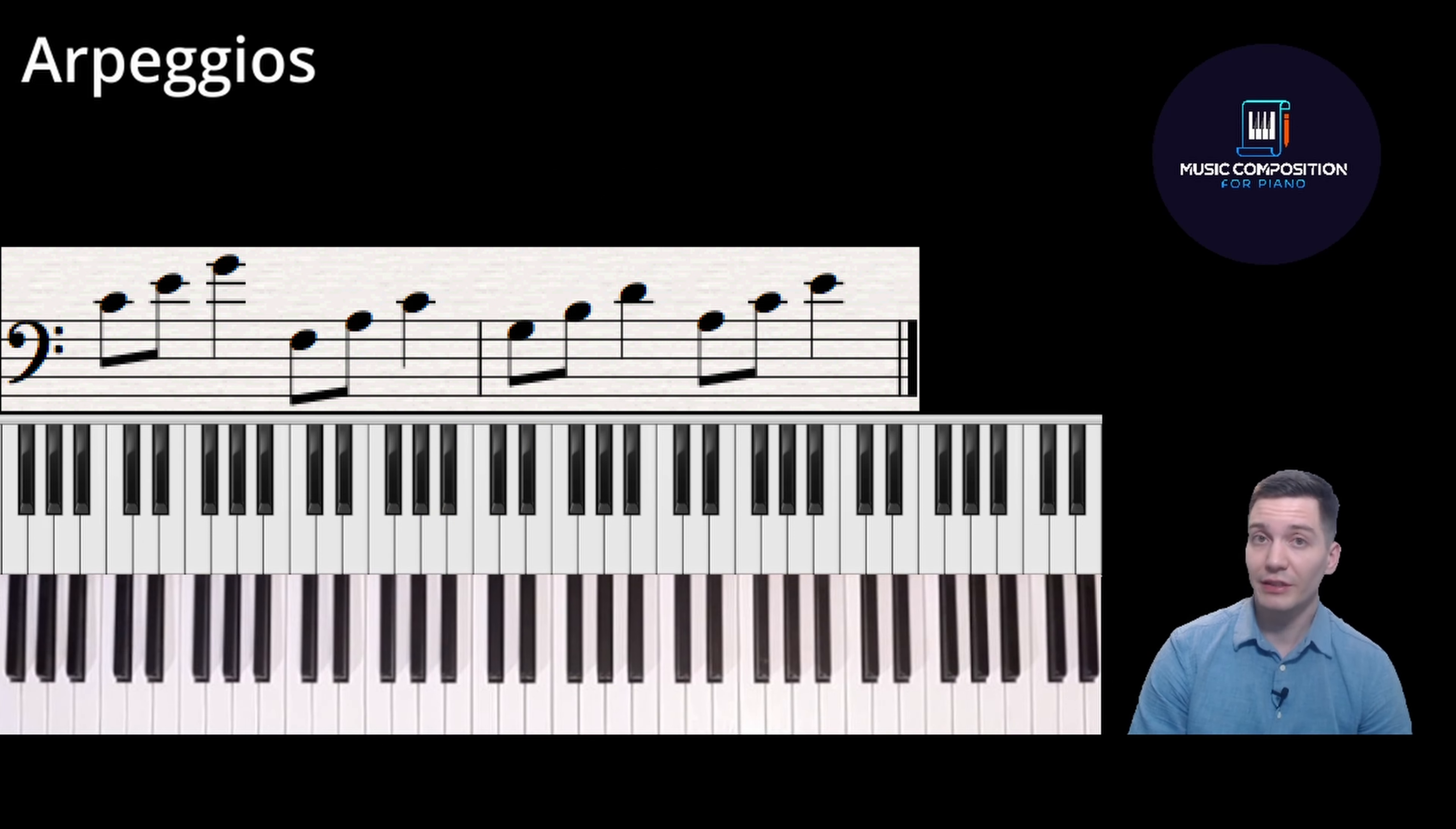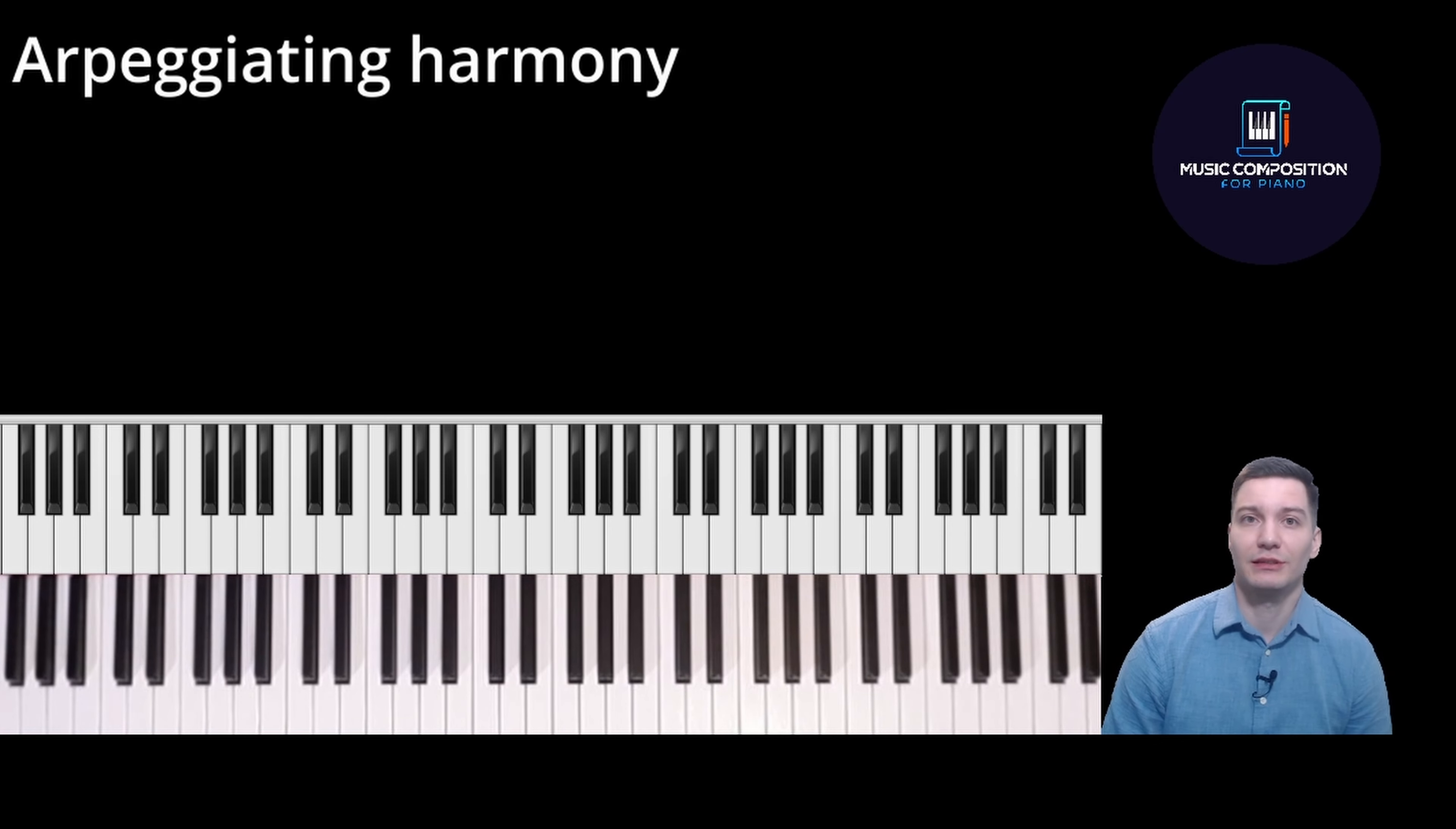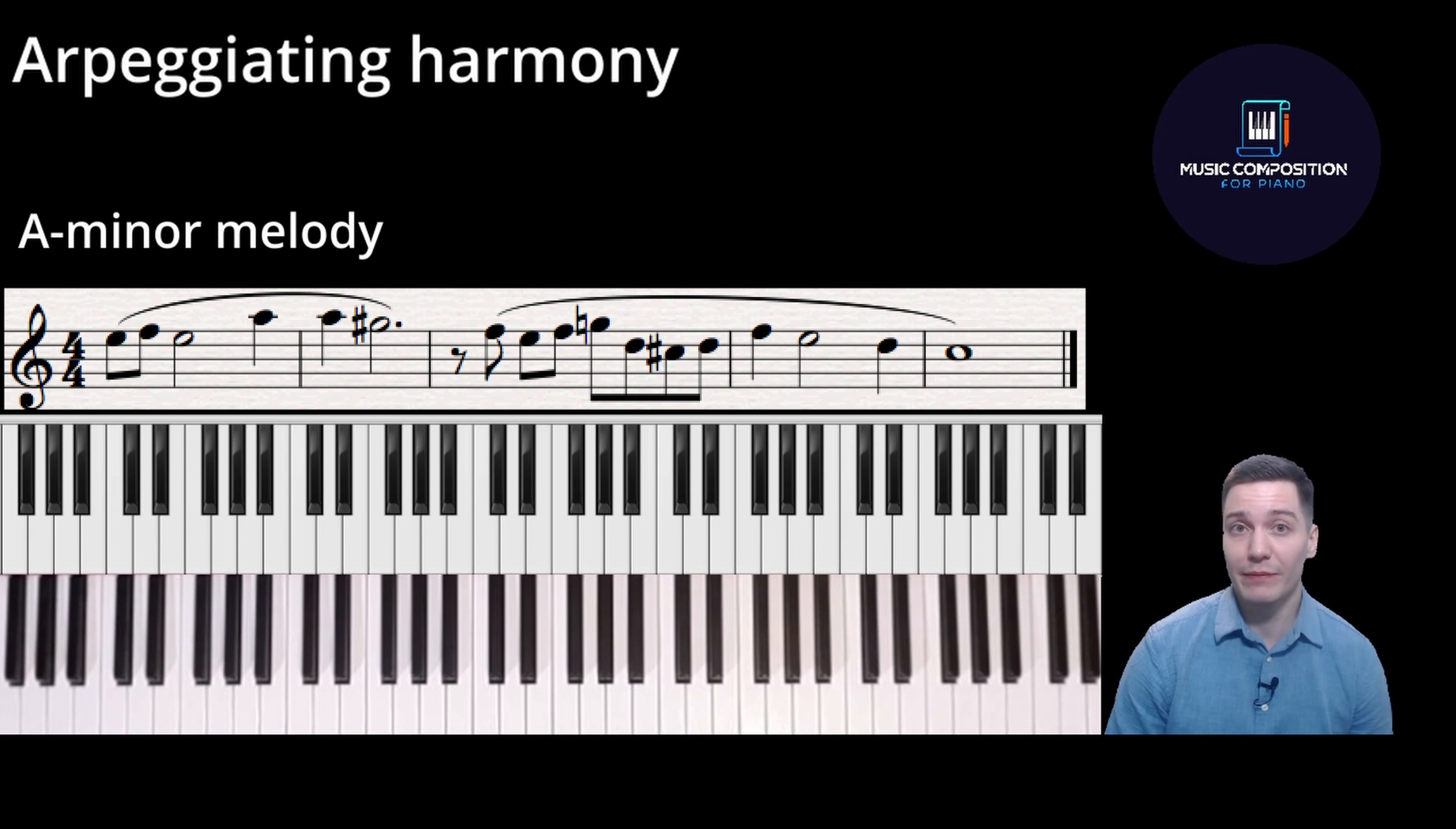So arpeggiating is rather simple when done like this, but it becomes more complicated when we want to harmonize a melody using arpeggios. So what we're going to do next is take an example melody in A minor and attempt to arpeggiate the harmony of this melody in different ways. So here's the melody played with a simple chord progression first.